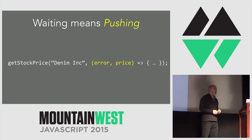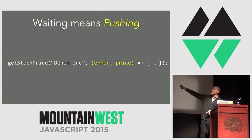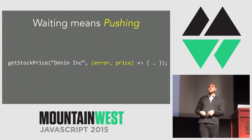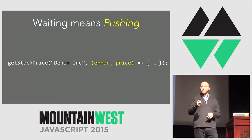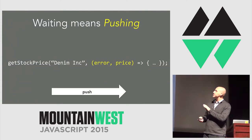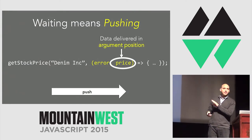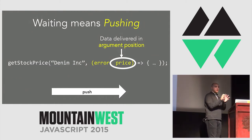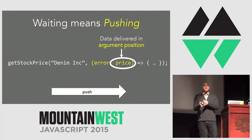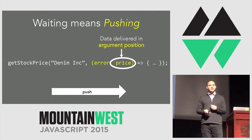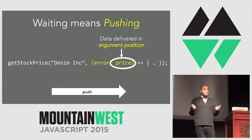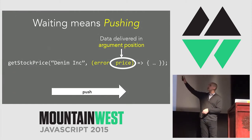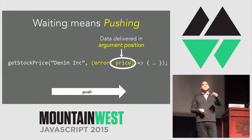But what if we want to wait instead of block? All of a sudden our code gets more complicated. Waiting is another way of saying 'pushing' in JavaScript. When we say pushing, we pass in a callback and data is delivered in the argument position of that callback. We're pulling when data is delivered in the return position of the function; we're pushing when data is delivered in the argument position of a callback. To wait without blocking, we need to push in JavaScript — so we pass in a callback.